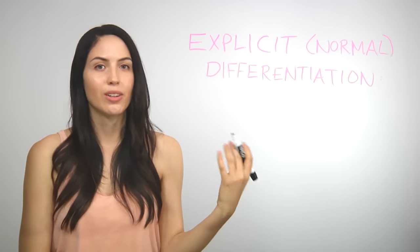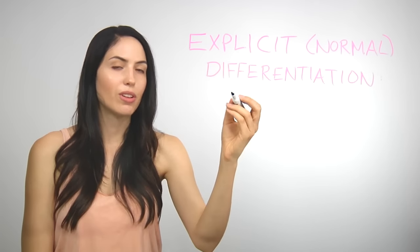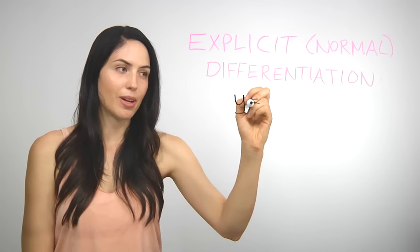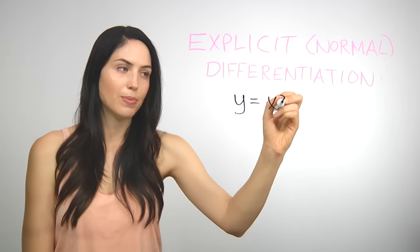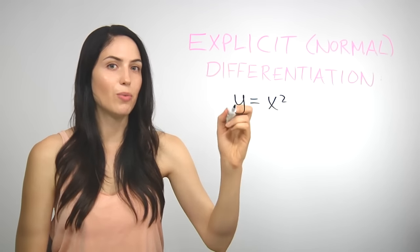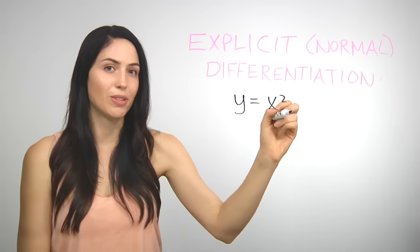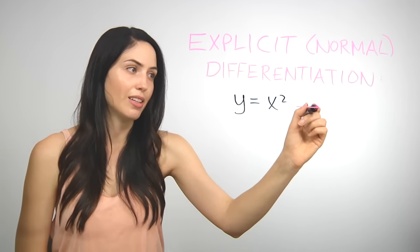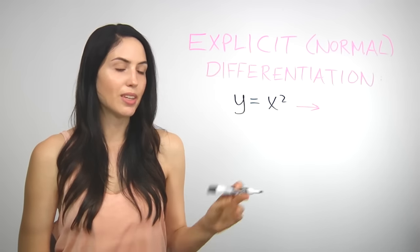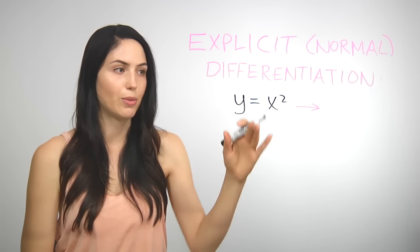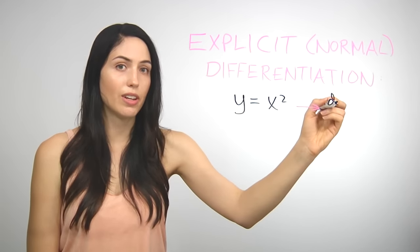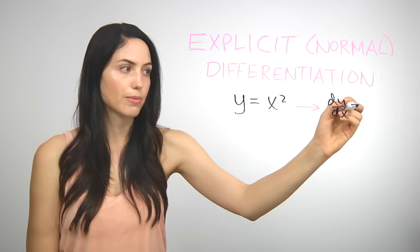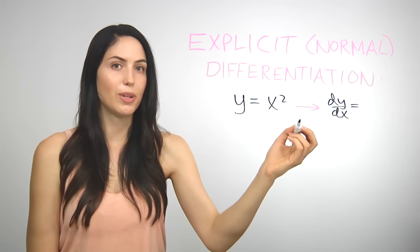Explicit differentiation is when you just have a normal y equals function — y equals some x expression — so it's a function written explicitly in terms of x. You probably already know how to take the derivative of something like this. You would just use the power rule, differentiate with respect to x, and your derivative, or dy/dx, would just be 2x.